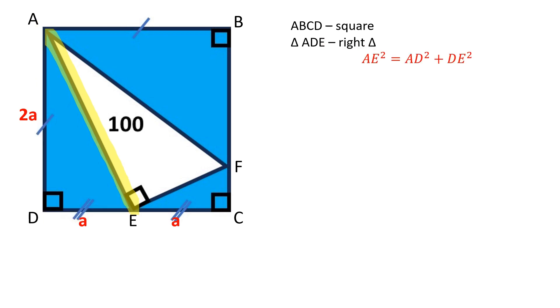We can find AE using the Pythagorean theorem. AE is equal to a square root of 5. Triangles ADE and EFC are similar.